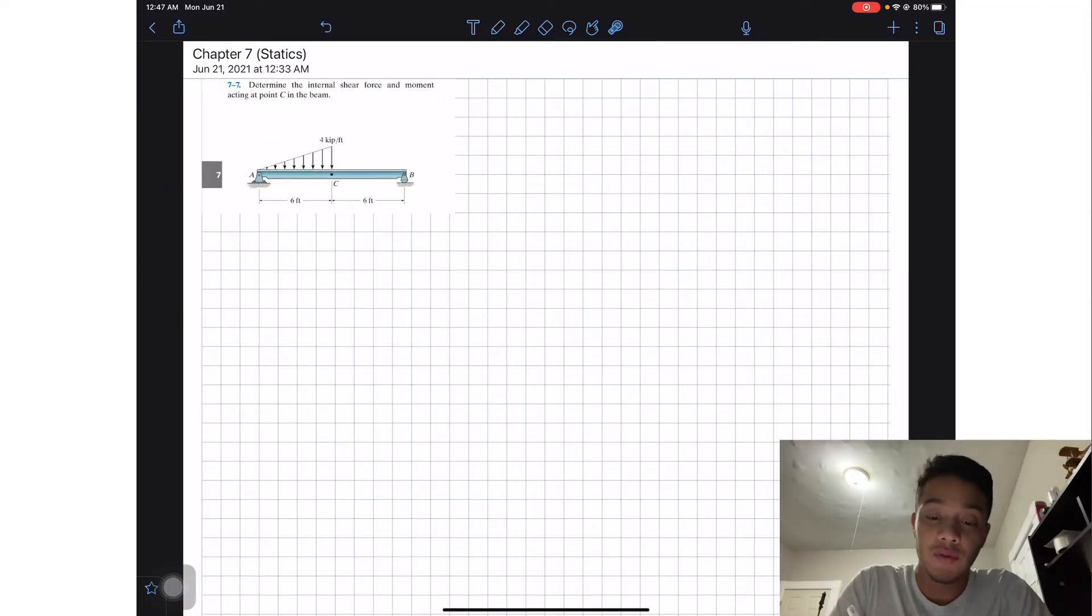Now we want to know what's the internal forces at point C. In order to solve for this problem we're going to apply a method which is basically the same as method of sections where we're going to section our part at C. But first let's just draw a free body diagram of my part.